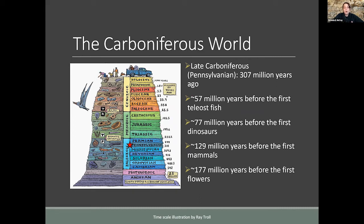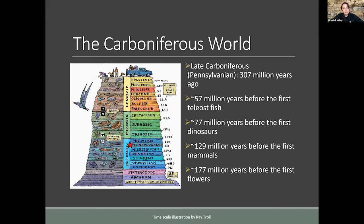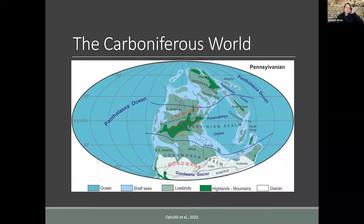It's also long before the first birds, about 129 million years before the first mammals, and about 177 million years before the first flowers or flowering plants. Although the ecosystem may be analogous in its structure to modern ecosystems, it had very different components. And it's not just the ecosystems that differ — the entire world and the shape of the continents looked quite different in the Carboniferous than they do today.